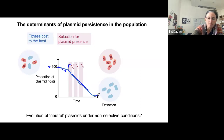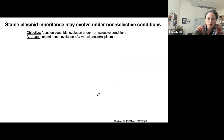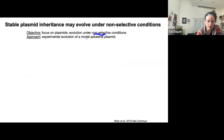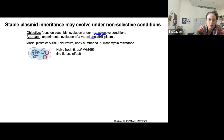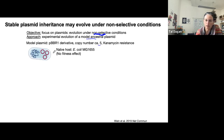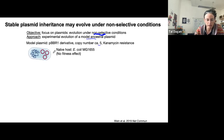So what happens under non-selective conditions? In order to try to answer that question, a couple of years ago we performed an experiment of plasmid evolution under non-selective conditions. We evolved a model plasmid that we call the ancestor plasmid — this is a pBBR1 derivative, so it's a relatively low copy number of about five when introduced into the naive host, which in our case is Escherichia coli. We made it very small so that the fitness effect on the host was almost negligible — you might call it a semi-neutral plasmid.